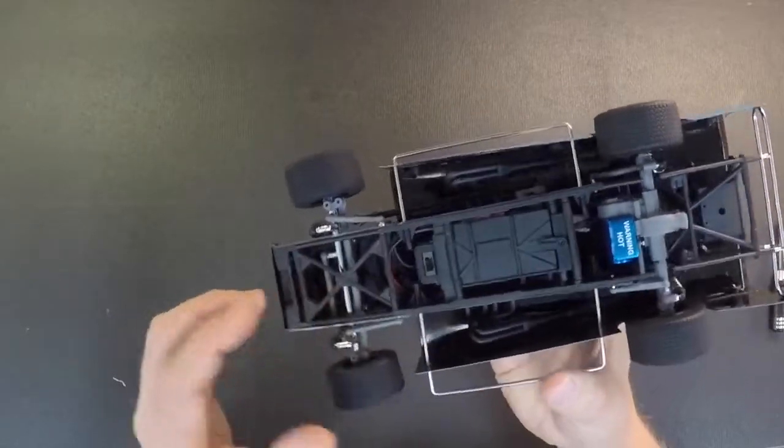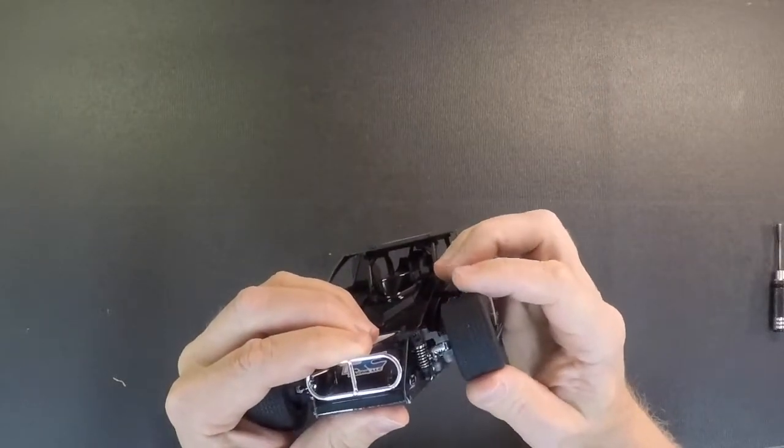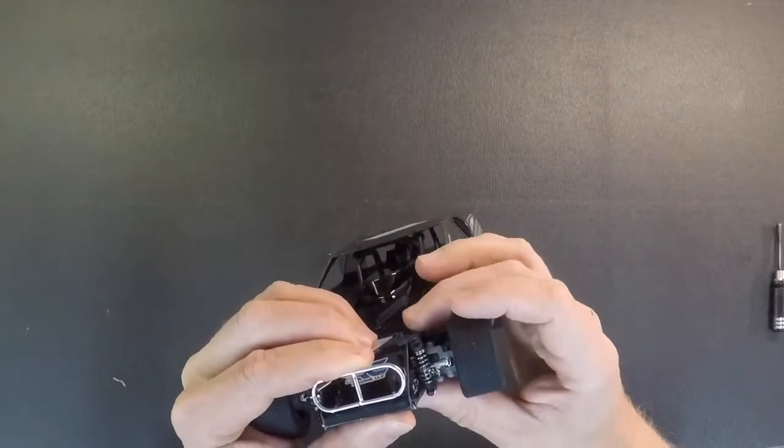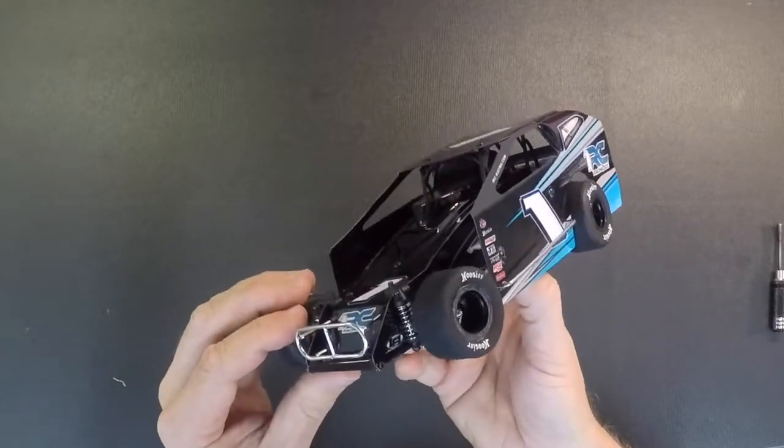The other video is on the shocks. These shocks have a little o-ring in them. They're just a friction shock. That o-ring will get dry, so you need to put a little bit of lube on that. We got a video on how to take the shock apart and lube that up.